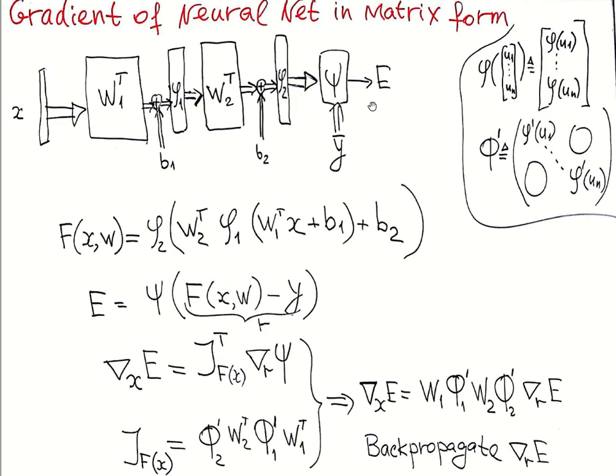The output of our network we will compare with desirable output for purpose of training. And E is some measure of error. E is a scalar obtained by applying function psi. Psi may be sum of squares but maybe other penalty functions for error.